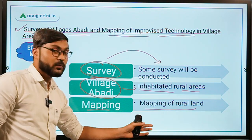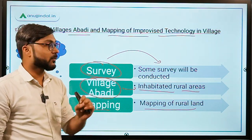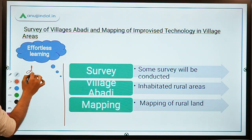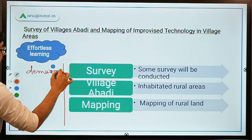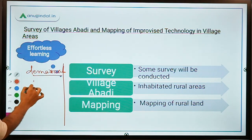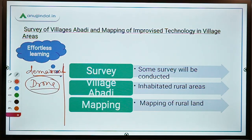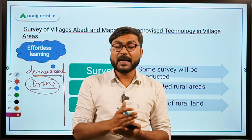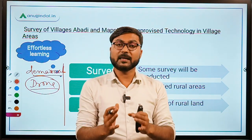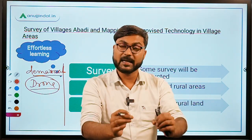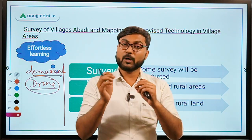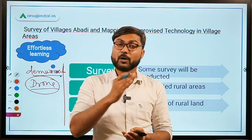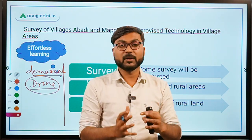If we combine all three words, the objective of this scheme is that the government is demarcating rural areas with the help of drones. Whatever rural lands there are, their demarcation will be done, and the owners of those lands will be given property cards. This way, properties that previously had no papers or registration will now have formal registration and formal papers with the owner.